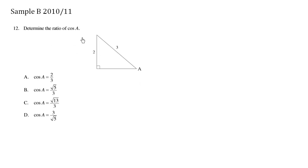Determine the ratio of cosine of A. Now cos A, this is a right-angled triangle. We have the SOHCAHTOA, and the cosine is going to be the adjacent over the hypotenuse.